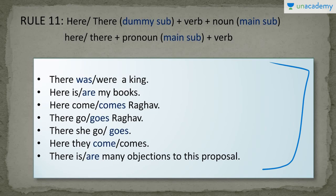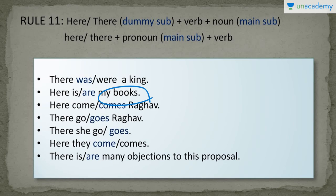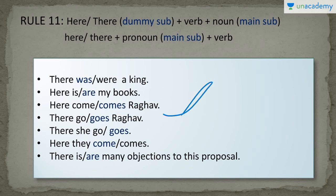The first sentence: 'There was a king.' The sentence starts with 'there,' which is a dummy subject. The main subject is 'a king,' which is singular, so I choose 'was.' The sentence becomes: 'There was a king.' Next: 'Here is or are my books?' The main subject is 'my books,' which is plural, so I choose 'are.' The sentence becomes: 'Here are my books.' Next: 'Here come or comes Raghav?' The main subject is 'Raghav,' which is third person singular, so I choose 'comes.' The sentence becomes: 'Here comes Raghav.'